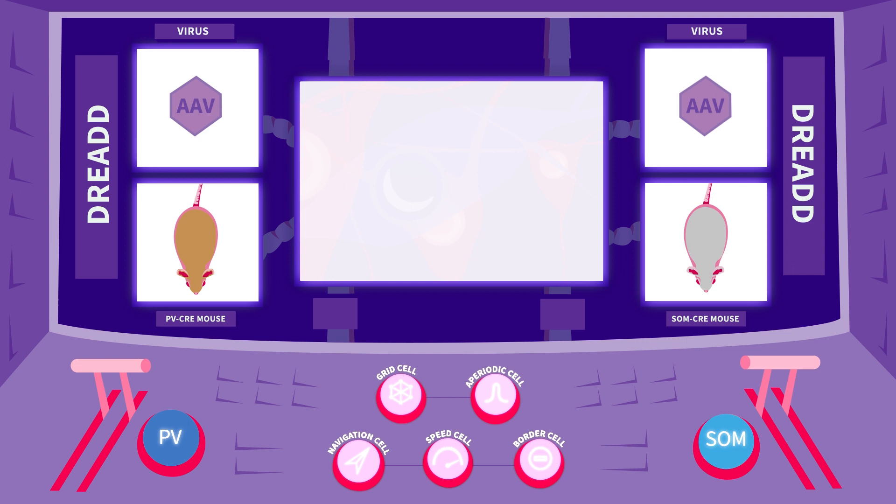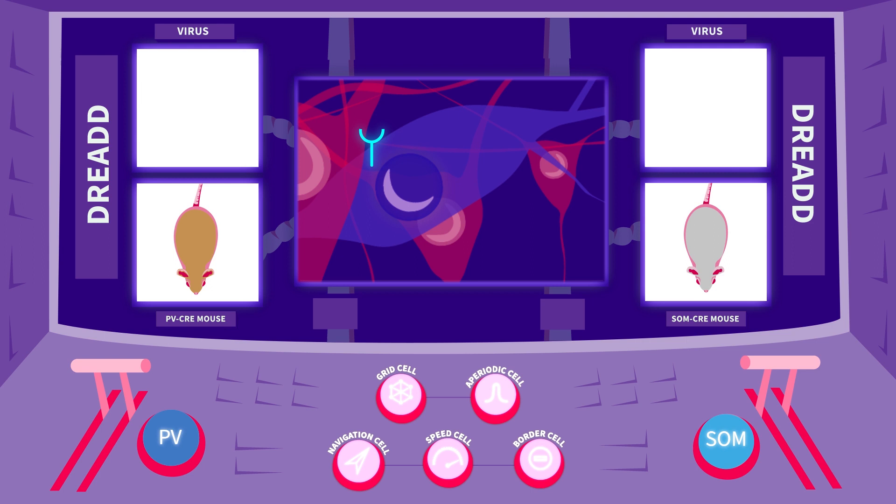A Cre-dependent AAV virus was injected into the medial entorhinal cortex of each group. This virus carried the gene for an artificial receptor, a DREADD. The Cre-dependent ensured that the receptor was expressed exclusively in PV or SOM interneurons, depending on the mouse line.